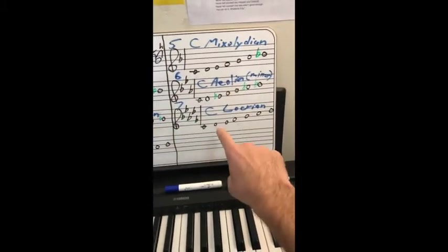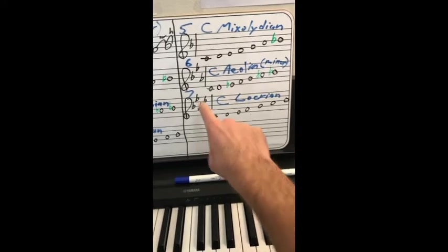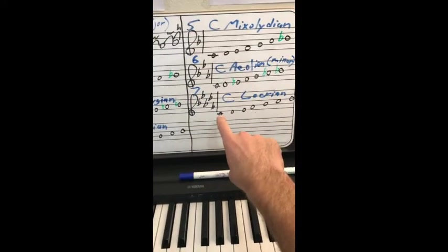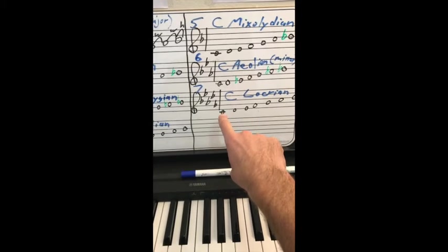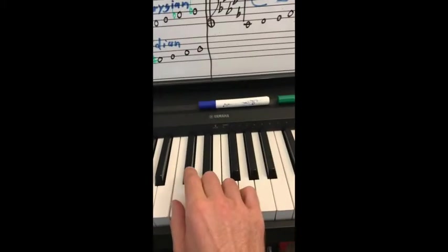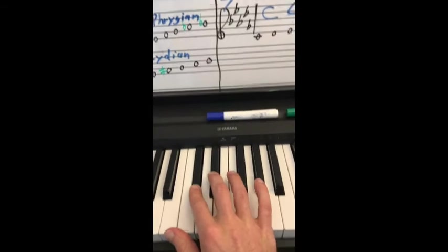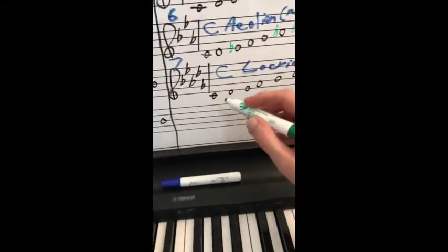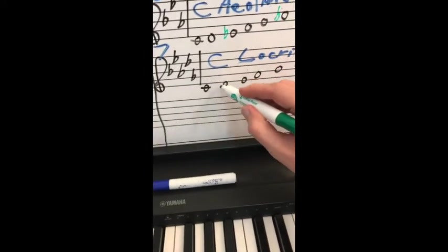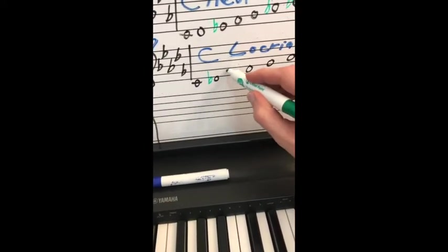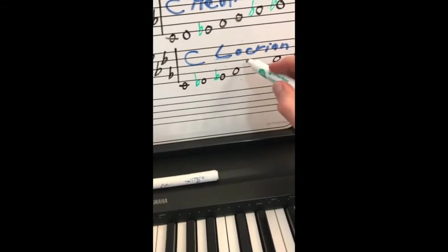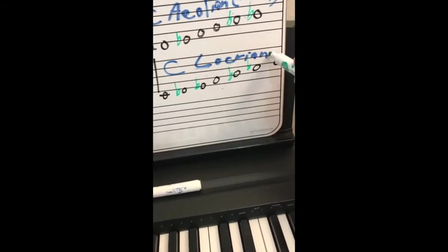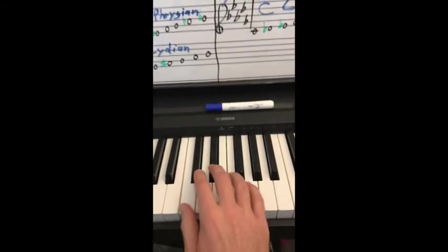We did Aeolian already, so the only one left is Locrian. Locrian is the seventh mode. That means C is the seventh tone of what major scale? Well, that's easy. Just go up a half step. So, D flat. D flat is the key of, excuse me, key of five flats. Write them in. Come on, marker. D flat, E flat, G flat, A flat, B flat.